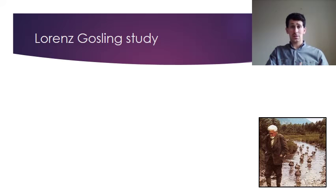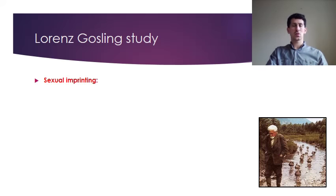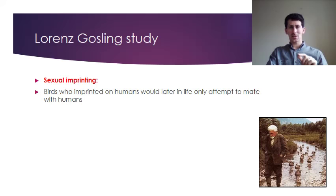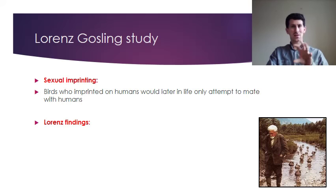Lorenz also found something called sexual imprinting: birds that had imprinted on humans, like the goslings with Lorenz, would only attempt later in life to mate with humans. So as well as imprinting for survival, there is also this idea of sexual imprinting.